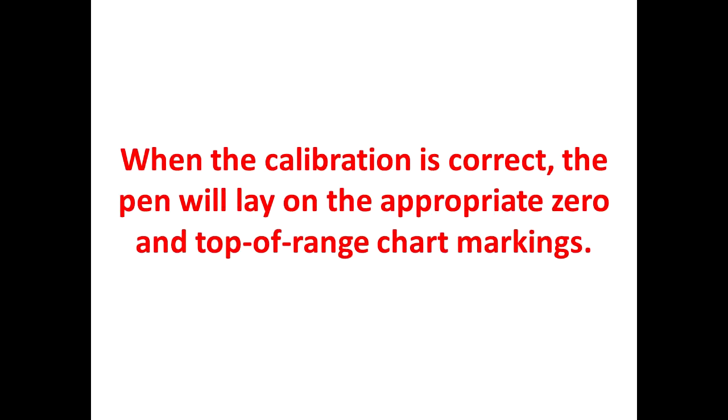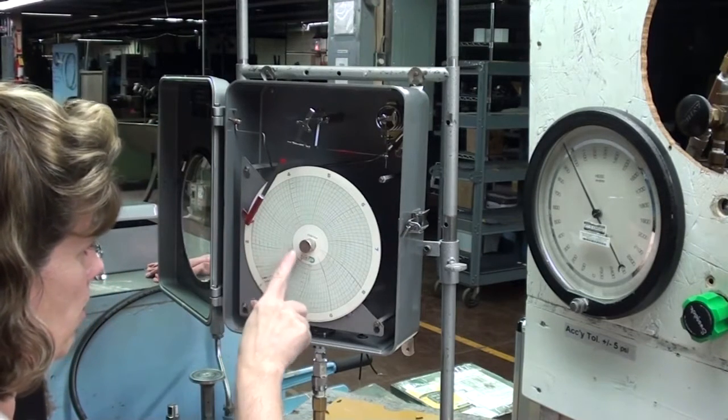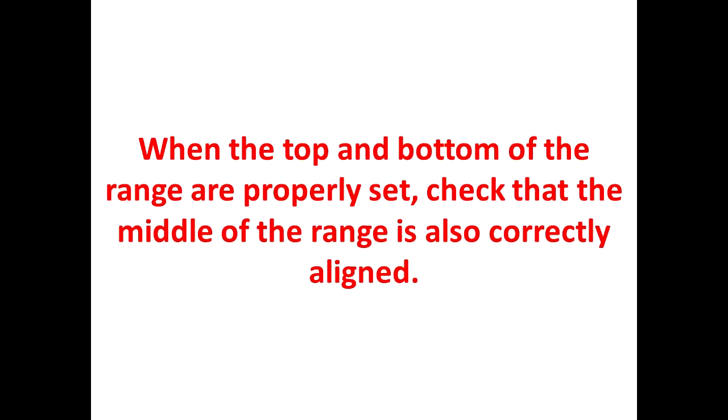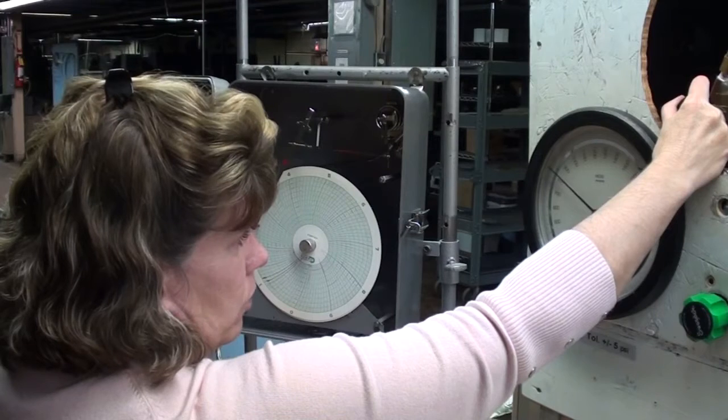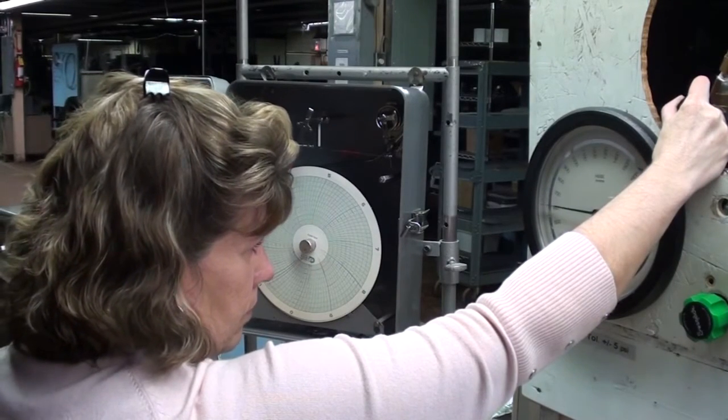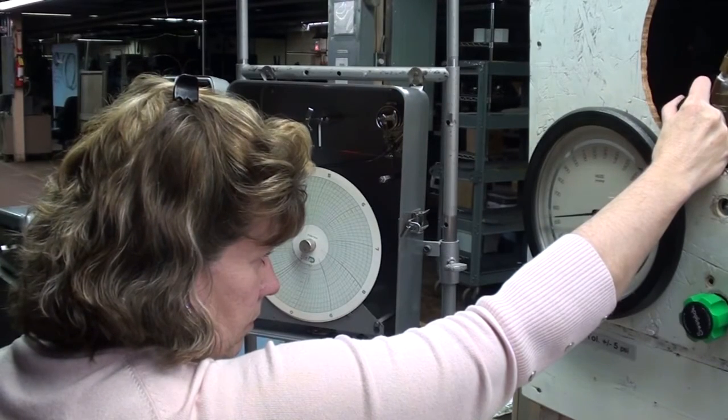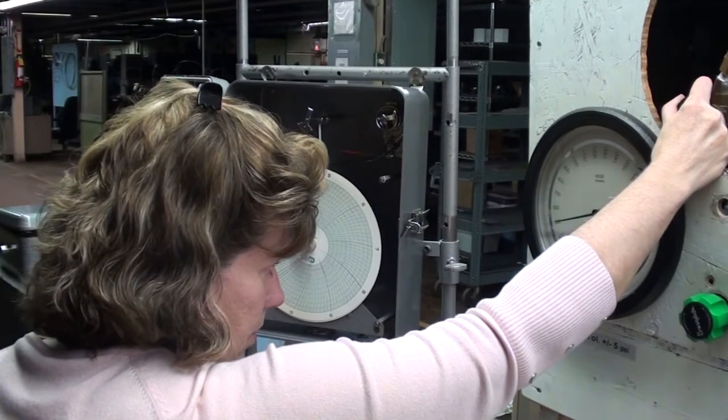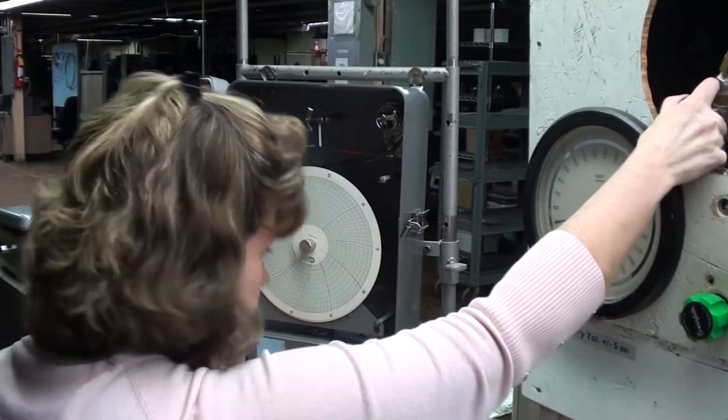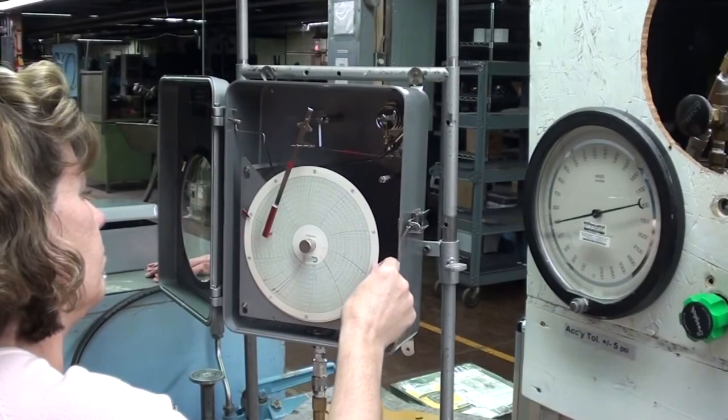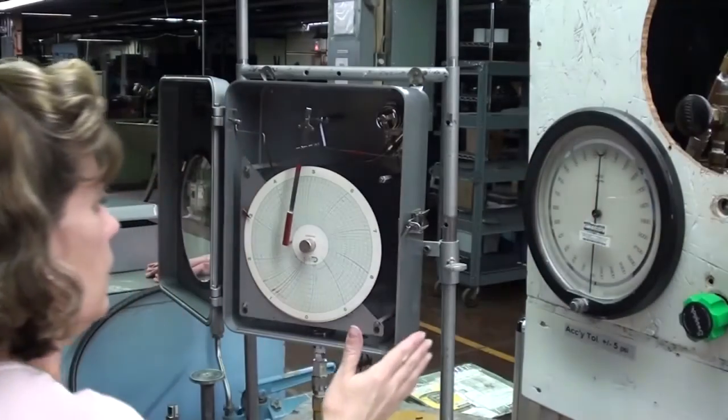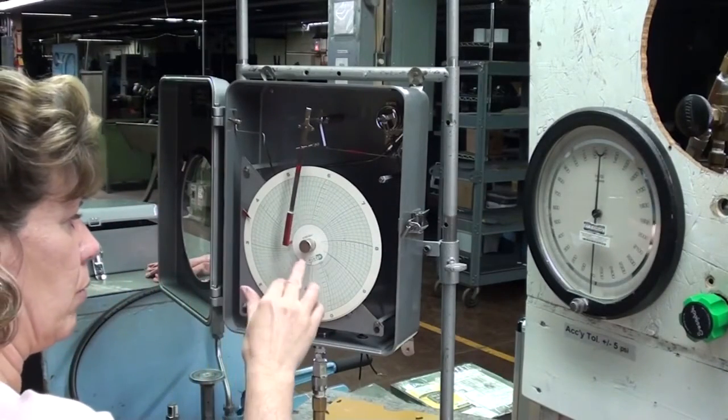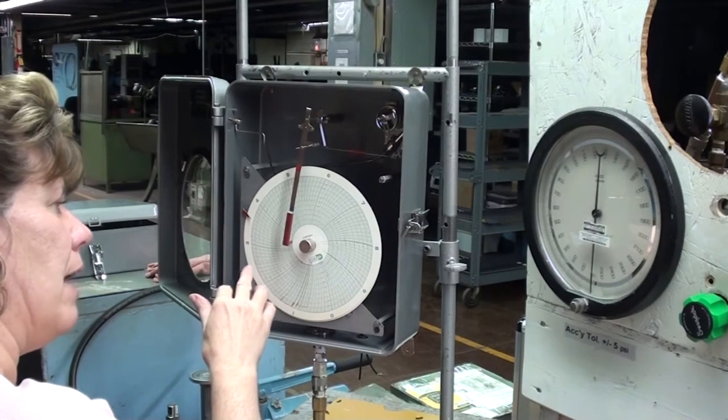Okay, we're calibrated. This is a zero to 1,000. We're at zero here, and we're at 1,000 at the top. Now, let's check a mill point on the charts. We're at 500 psi. And we're at zero. When we calibrate, we do zero, we do the middle going up, top, and then the middle coming down.